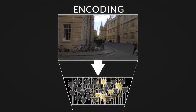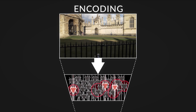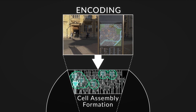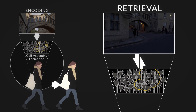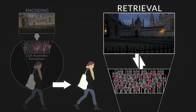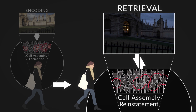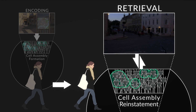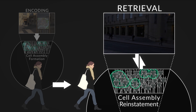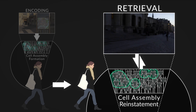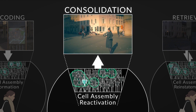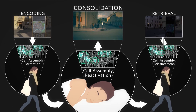Memories are assumed to be represented in the brain by sets of neurons that fire together to form functional groups, referred to as cell assemblies. Recalling a past event requires reinstating those cell assemblies formed during the initial experience. For such assemblies to survive and enable memory recall, they need to be stabilized, or consolidated — a process thought to depend on their reactivation during offline behavioral periods such as sleep or rest.